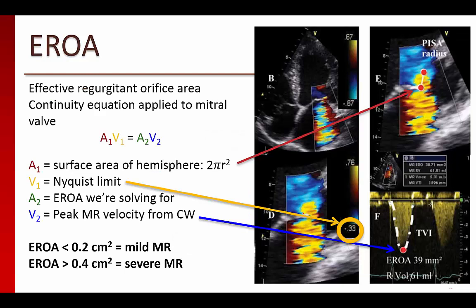We use the PISA method to determine the effective regurgitant orifice area using the continuity equation, which states that A1 times V1 equals A2 times V2 — the same principle used to determine aortic valve area in aortic stenosis. Now that we know the surface area of the hemisphere of blood approaching the regurgitant orifice, the aliasing velocity or Nyquist limit, and the peak MR velocity from continuous wave Doppler, we use the continuity equation to solve for the EROA. Several limitations exist: the method assumes the regurgitant orifice is round and that the PISA shells are perfect hemispheres, and it is inaccurate with multiple or eccentric jets. Note that the images shown use transthoracic echo, but the same concept applies for TEE.